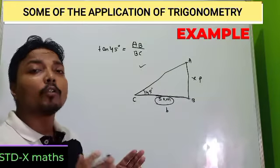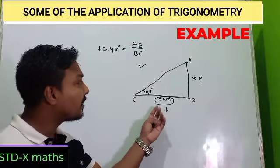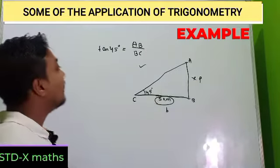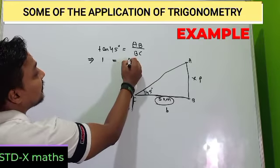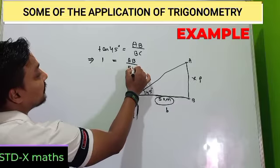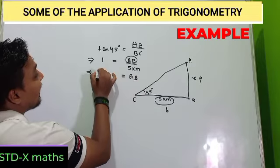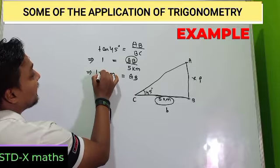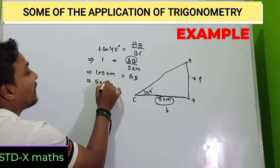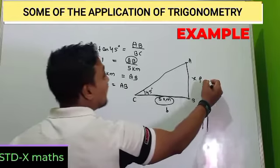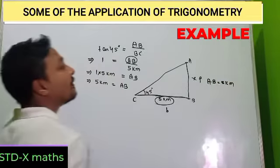This is an important point — always write the trigonometric ratio expressible in the form of the given side and the asked side. Next, tan 45° = 1, so 1 = FB/BC. FB is not given, but BC is given as 5 km. I want FB, so keeping FB on the right side and transposing everything else to the left, FB = 1 × 5 km = 5 km.